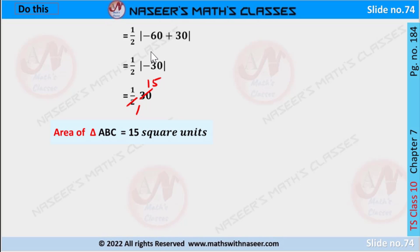Now we simplify -60 plus 30, we get -30. We already know that modulus of -30 is written as 30. Now here we cancel: 2s into 15 equals 30, then we get 15. Therefore area of triangle is equal to 15 square units.